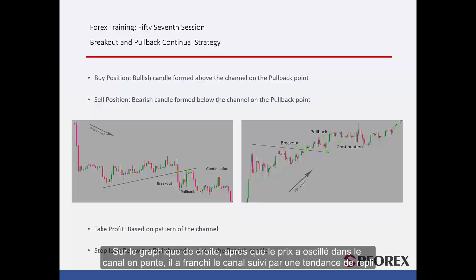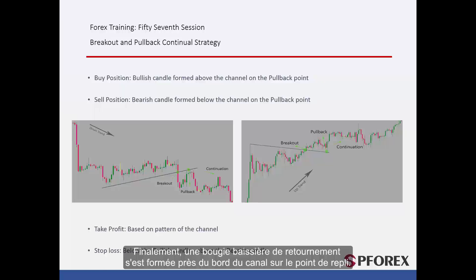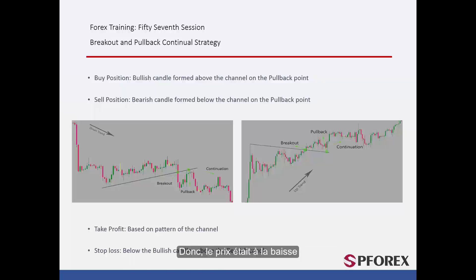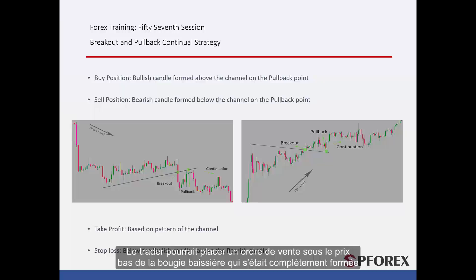On the right graph, after the price oscillated in a gradient channel, it has broken the channel followed by a pullback trend. Finally, a reversal bearish candlestick has formed near the edge of the channel on the pullback point, so price decreases towards the bottom. A trader could place a sell order under the low of the bearish candle that has formed completely.